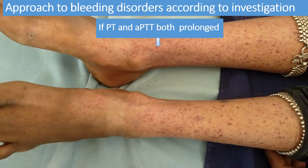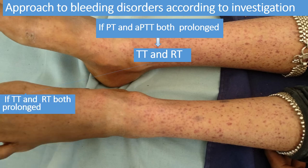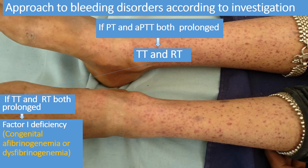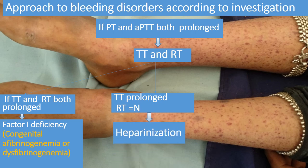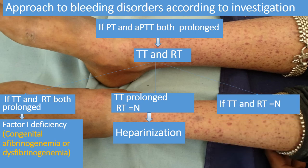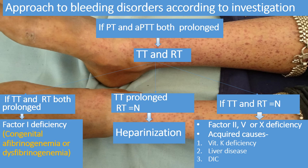If both PT and APTT are prolonged, proceed to thrombin time and reptilase time. If both TT and reptilase time are prolonged, the child has factor 1 deficiency — congenital afibrinogenemia or dysfibrinogenemia. If only TT is prolonged while reptilase time is normal, it is due to heparinization or sample collected in a heparinized tube. If both thrombin time and reptilase time are normal, suspect factor 2, 5, or 10 deficiency.